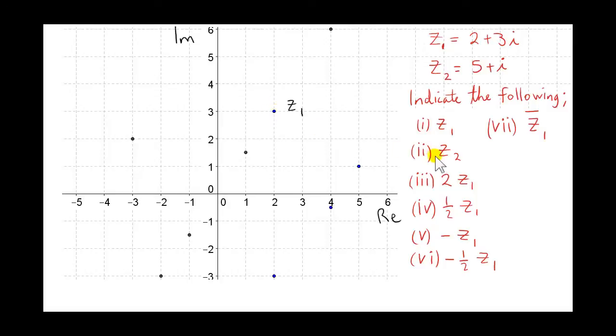Next we want z2, which is 5 plus 1i. The real part is 5 and the imaginary part is 1, so here is z2.